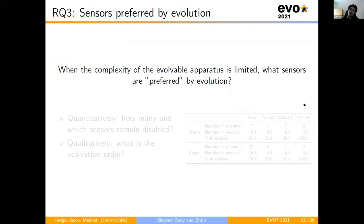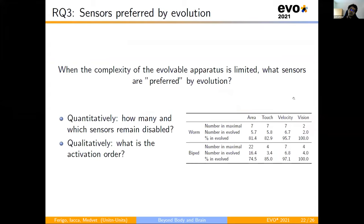Now our last question, that is, when the complexity of the evolved apparatus is limited, what sensors are preferred by the evolution? We answered this both from a quantitative and qualitative point of view. Quantitatively, we observed how many of which sensors remain disabled, while qualitatively, we observed what is the activation order in evolution time of the sensors.